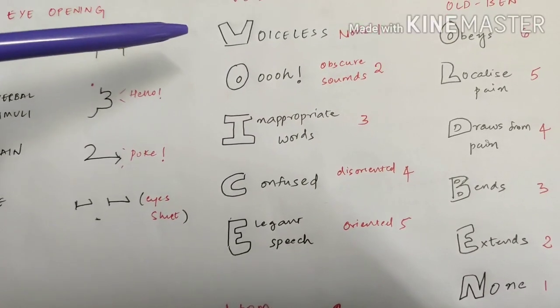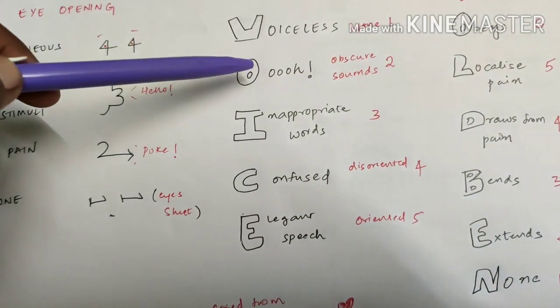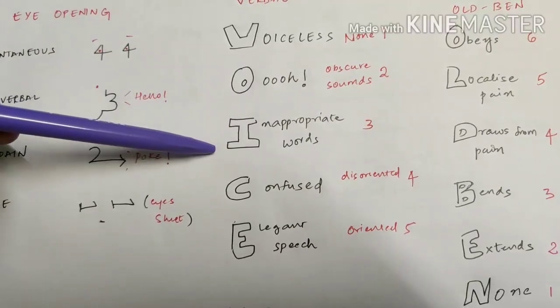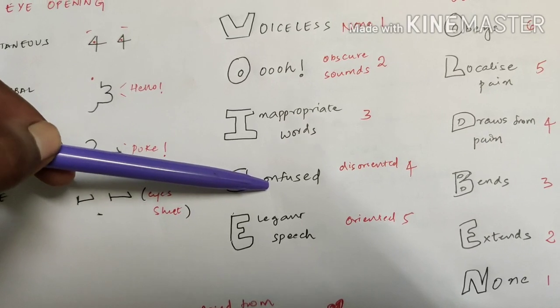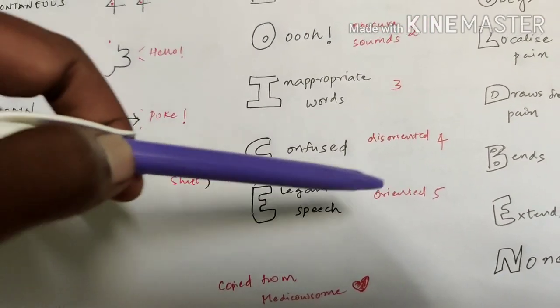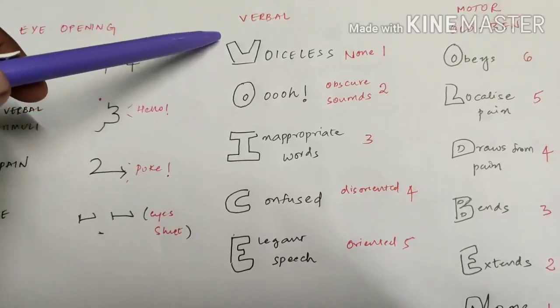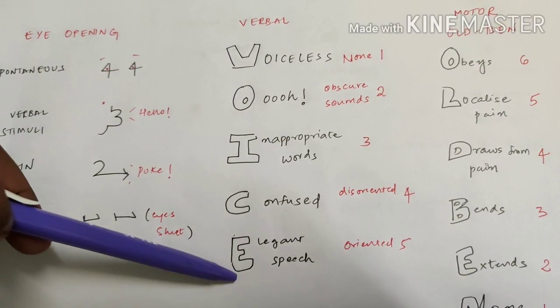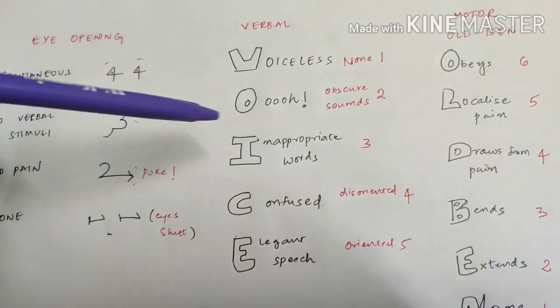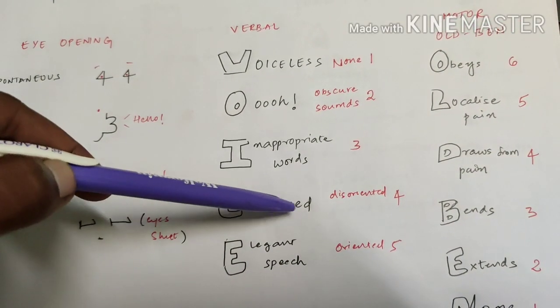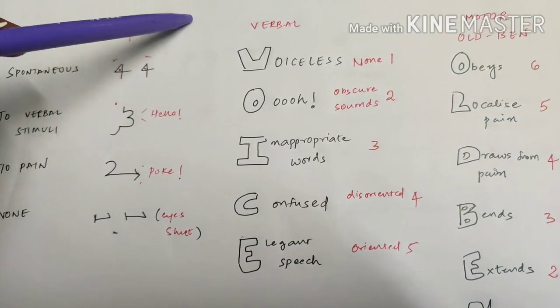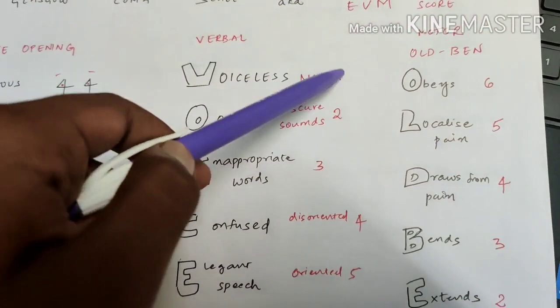I for inappropriate words - inappropriate words means he will babble like anything. I love about like that, then score is three. If he just does some sounds, the score is two. After I, see C - when he's disoriented or confused but he's talking well, the score will be four. When he has a good elegant speech, that means oriented speech, the score is five. Said simple. Now we - VOICE. That means for verbal: V for voiceless one, O for obscure sounds two, I for inappropriate words three, C for confused disoriented speech four, E for elegant speech or oriented speech - the score will be maximum five.